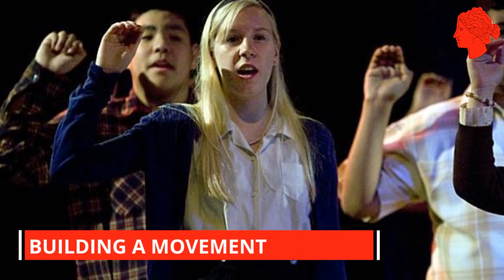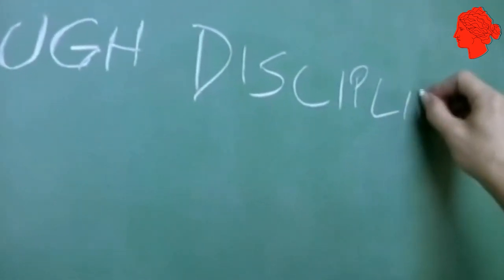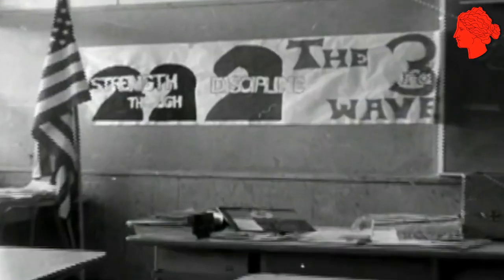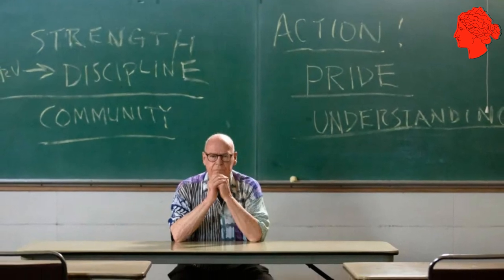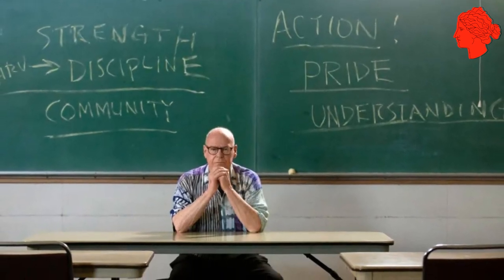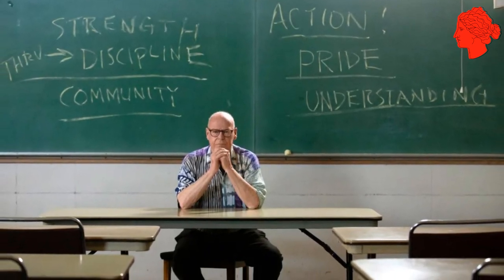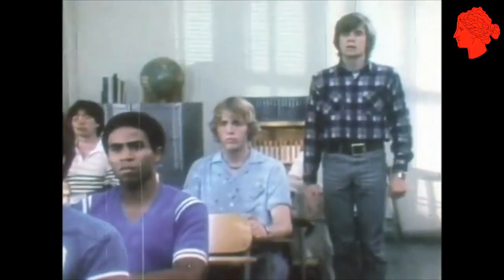As the experiment progressed, Ron Jones began shaping a more defined movement within his classroom. He named it the Third Wave and introduced additional elements to enhance the sense of group identity and purpose. A special salute, resembling a wave, became a symbol of membership and solidarity. Jones also created a slogan — 'Strength through discipline, strength through community, strength through action' — which the students chanted enthusiastically.